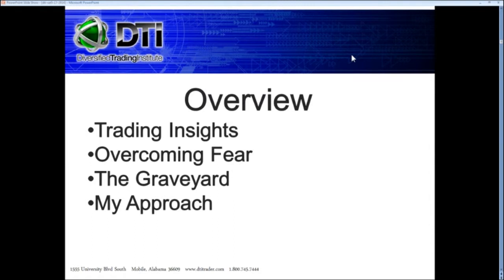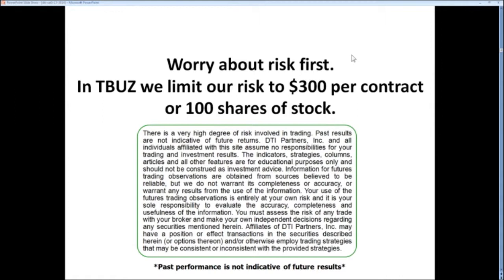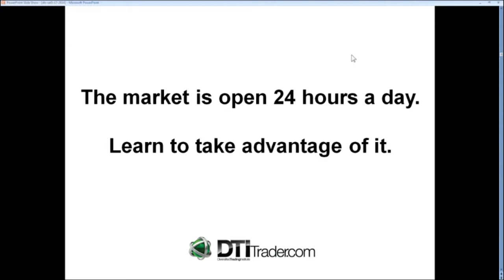Our presentation today covers more trading insights, fear in trading, how I handle losses emotionally, and my approach to trading. In our T-Buzz service, we risk $300 per contract on 100 shares of stock, six points on an e-mini, and $3 on a stock option — simple and straightforward. The market is open 24 hours a day: there's an Asian market, a European market, an early U.S. market, and a late U.S. market. All of these markets can be taken advantage of if you have the knowledge.